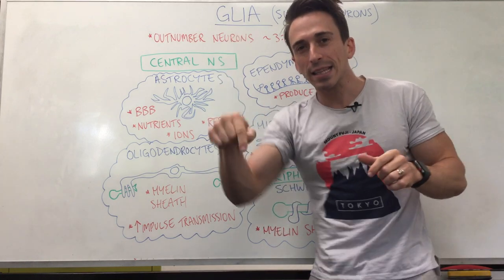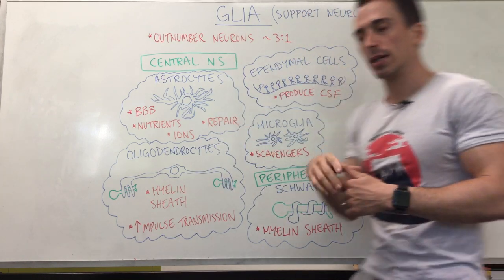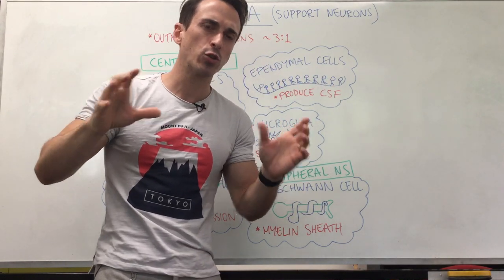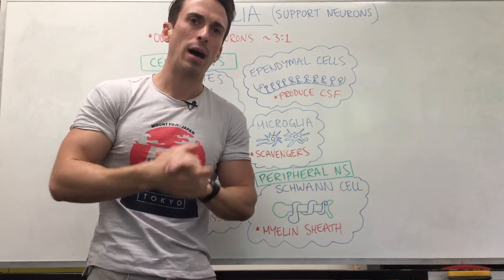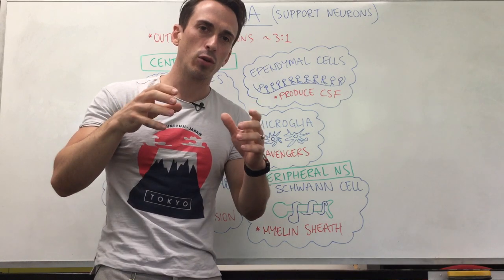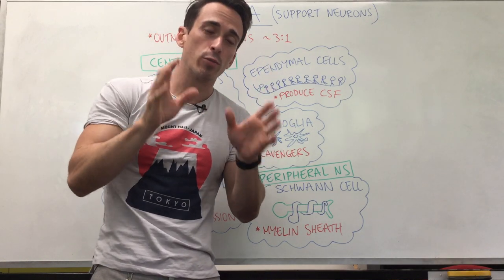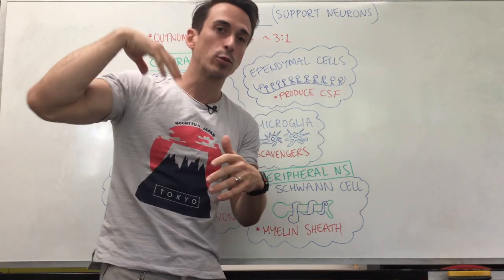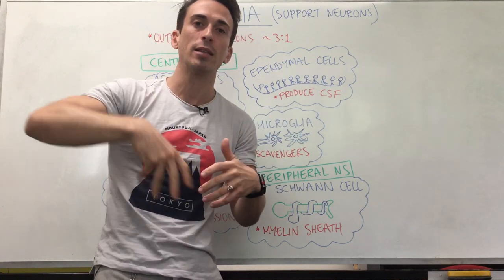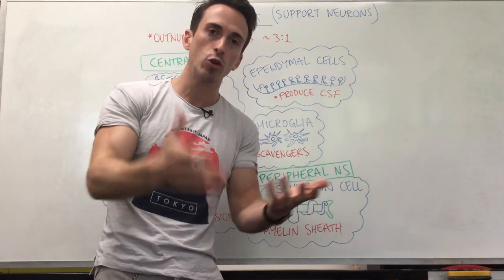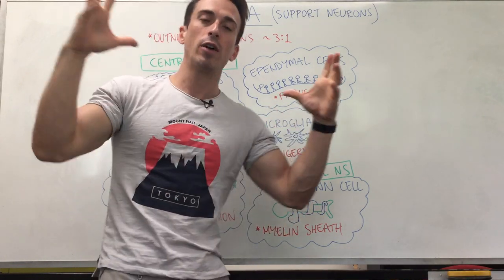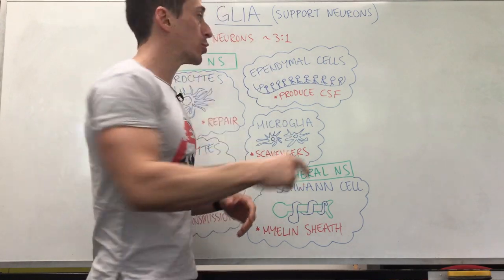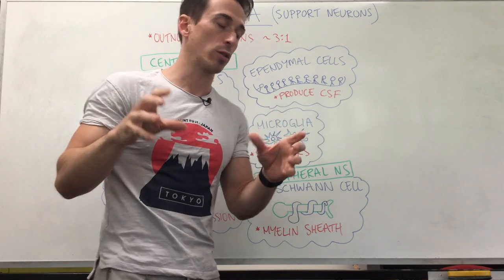Another type of glia in the central nervous system are the ependymal cells. These cells line the roofs of our ventricles — the hollowed parts of our brain — which are there to produce cerebrospinal fluid. Remember our brain and spinal cord floats in a sea of cerebrospinal fluid, which helps wash away toxic metabolites that have built up over time, delivers nutrients, and provides shock absorption for our brain and spinal cord. The cerebrospinal fluid is produced by the ependymal cells lining our ventricles.